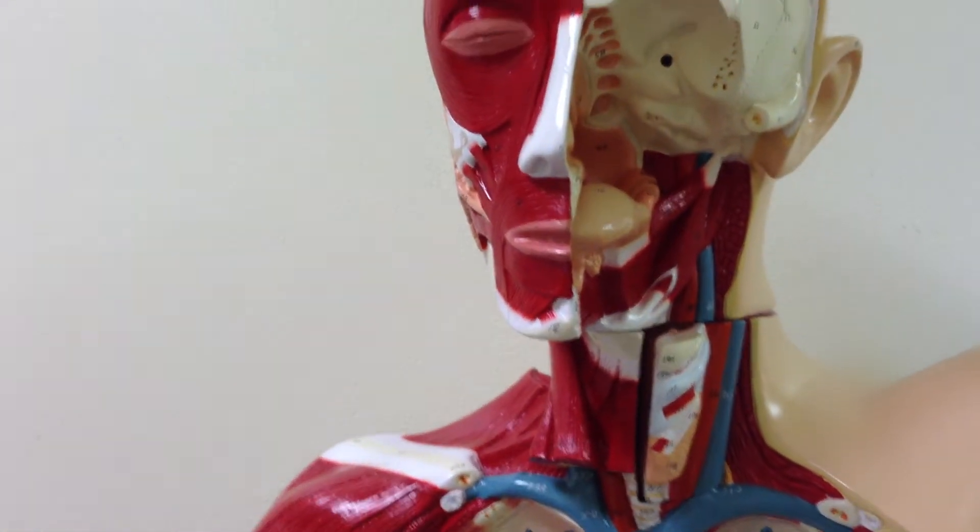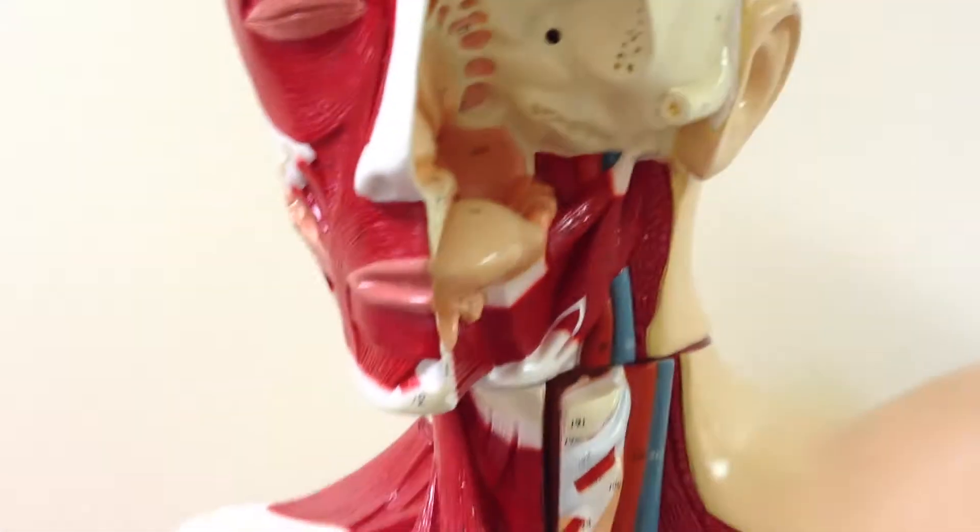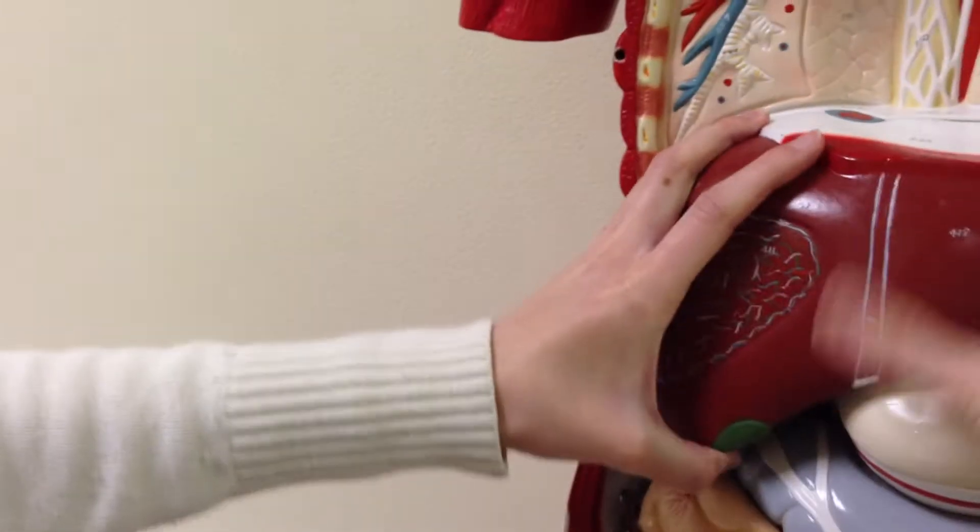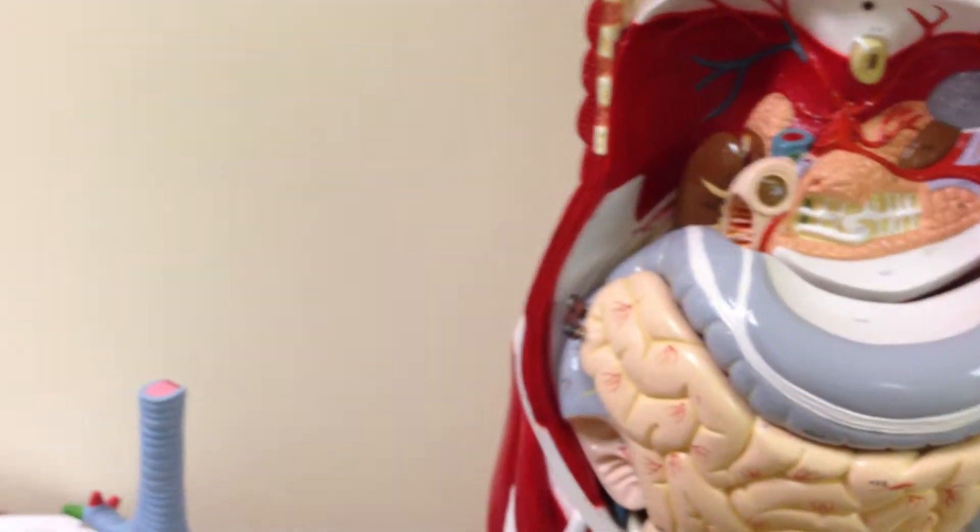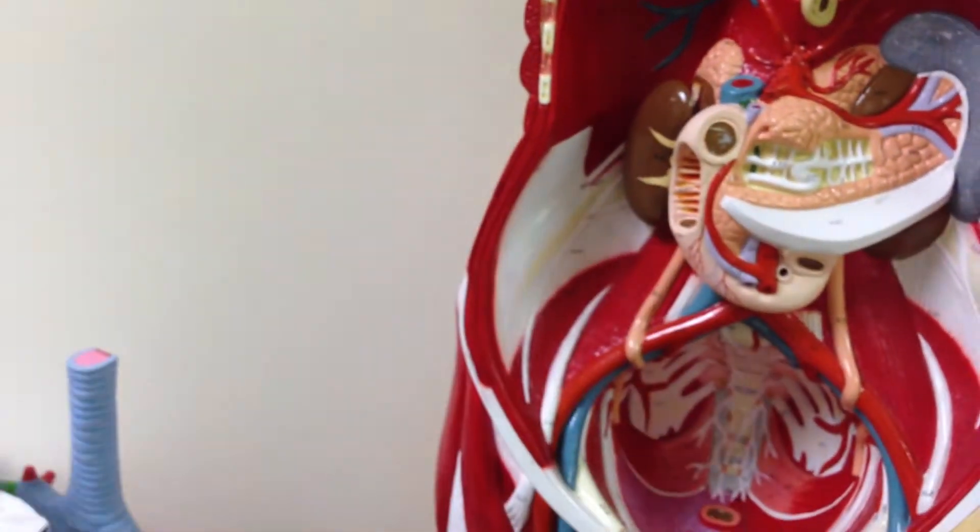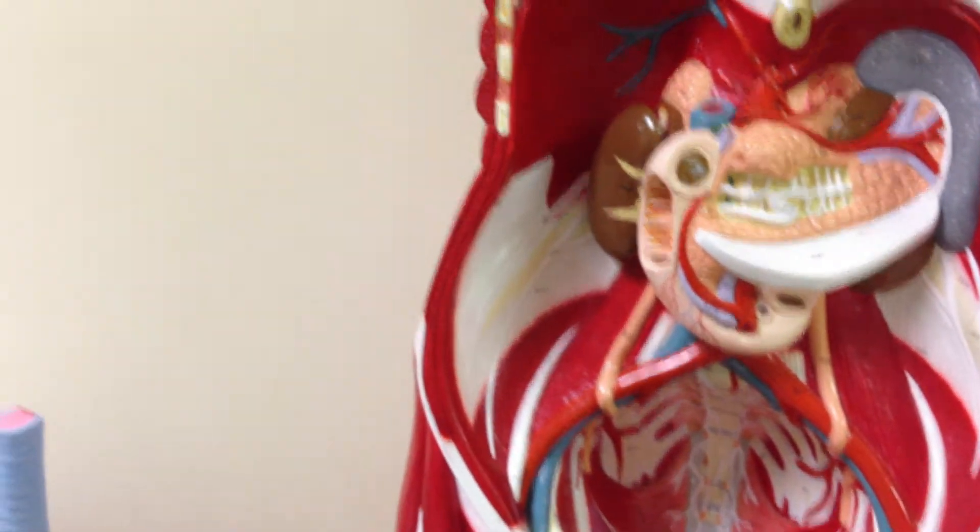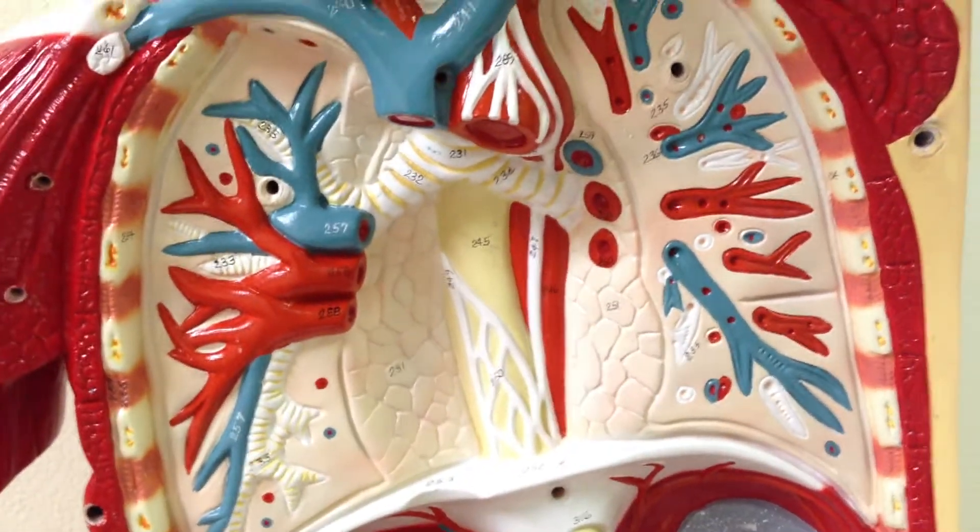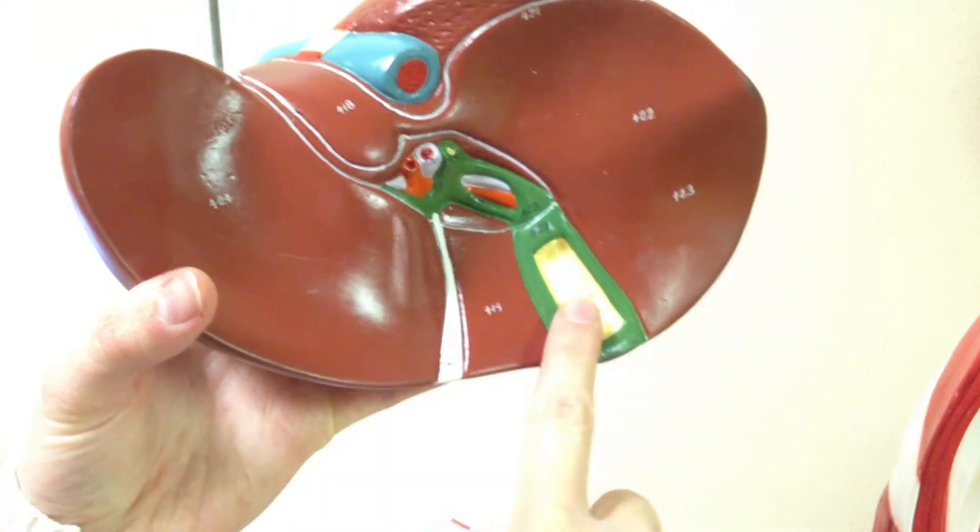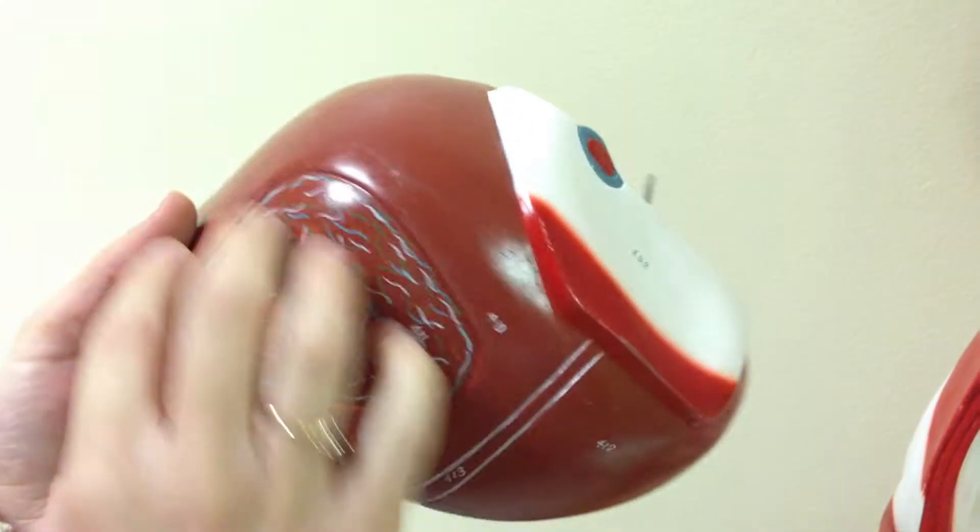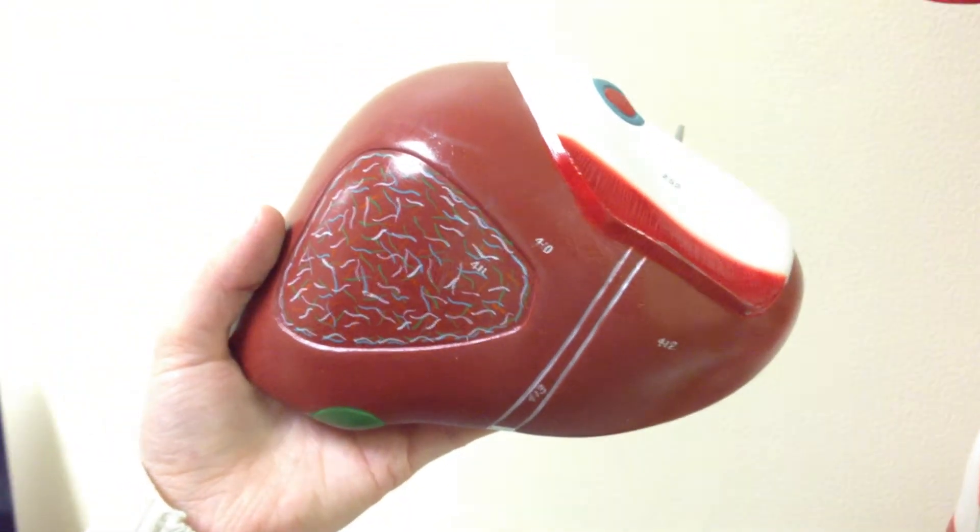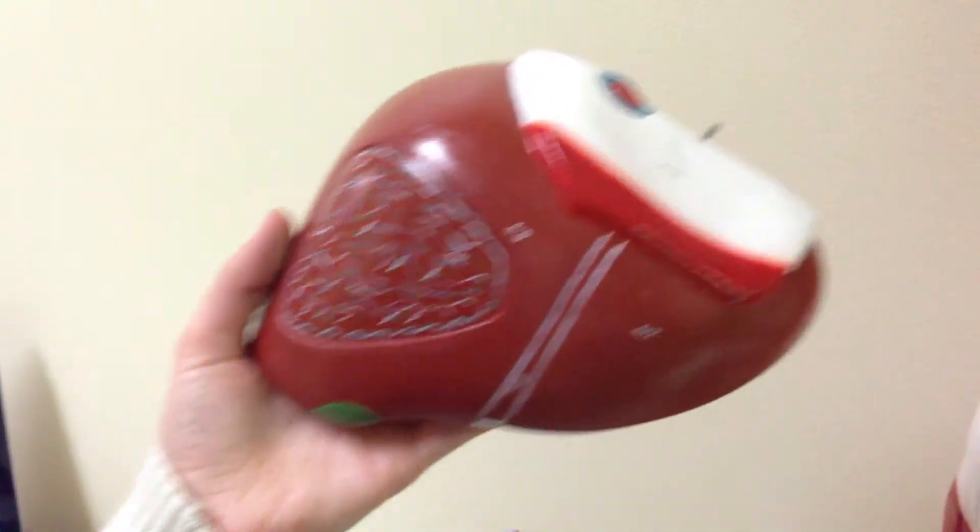Okay, so then the next accessory digestive organ is the gallbladder which I'll have to take this apart to see. The gallbladder is right here on the back of the liver, and the liver is actually also an accessory organ, and so is the pancreas which is right here.